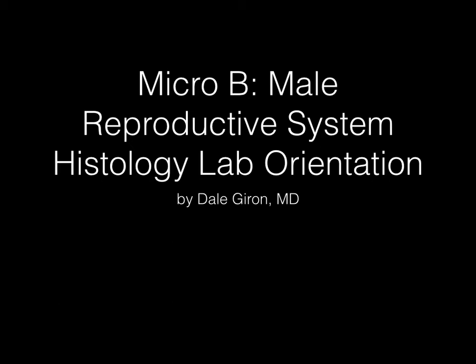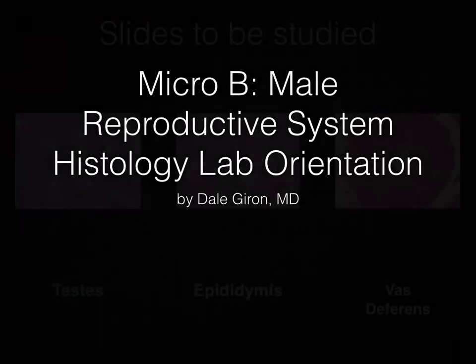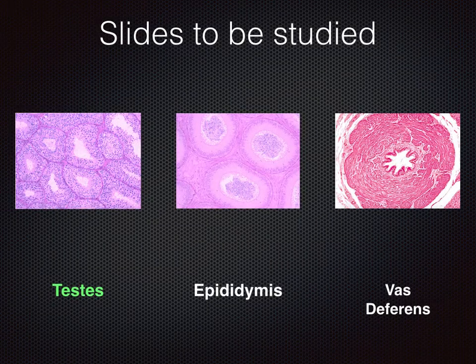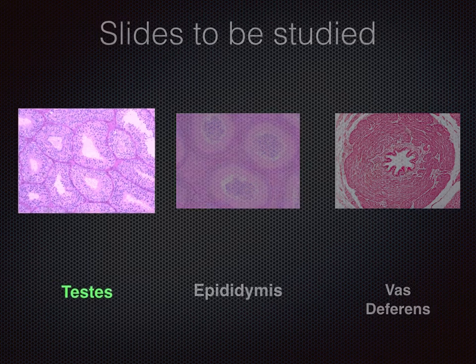Our topic for today is the male reproductive system. The slides that we will be studying today include testis, epididymis, and vas deferens.